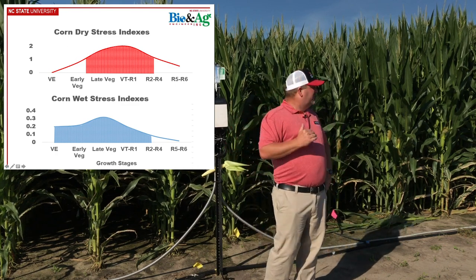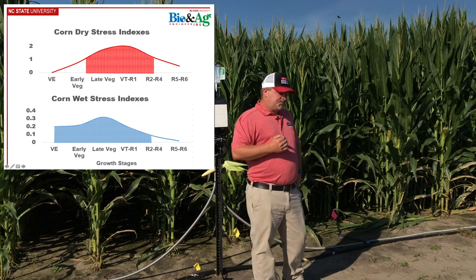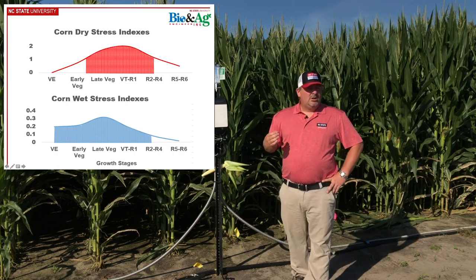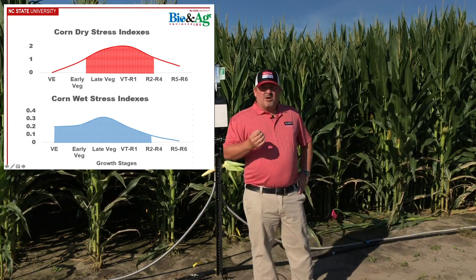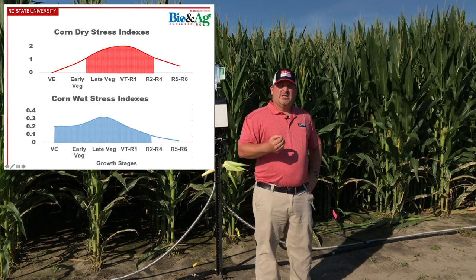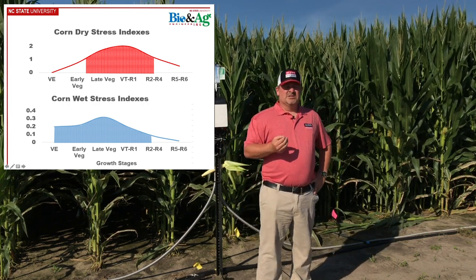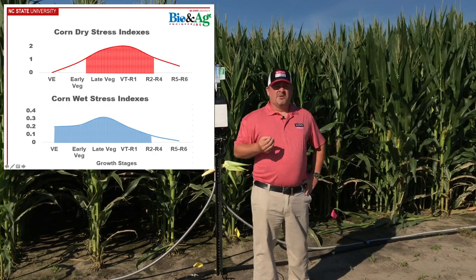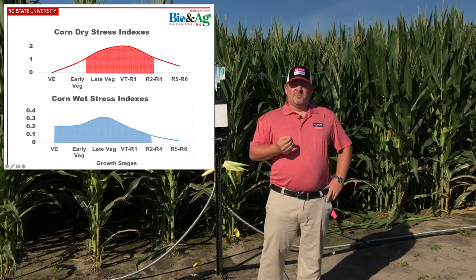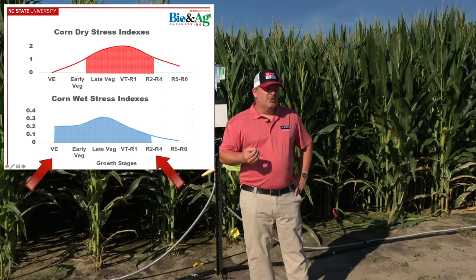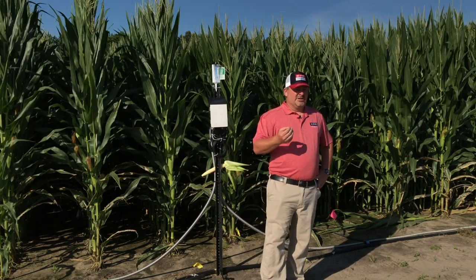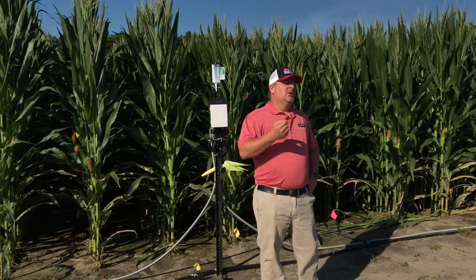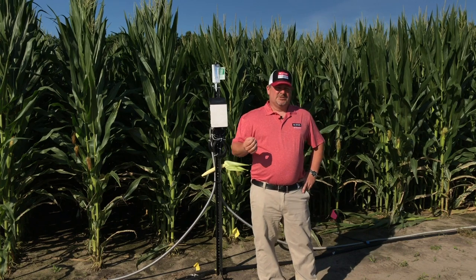Looking at wet stresses in corn, we see that stress occur pretty much season long. We have yield losses essentially all during the year, and we've seen that throughout Eastern North Carolina this year with heavy rainfall events in April and May. From emergence all the way to R2, we can have significant wet stresses affecting the crop, which implies how important drainage is for season-long management — having a good drainage system to get water out of the root zone and prevent saturated conditions.